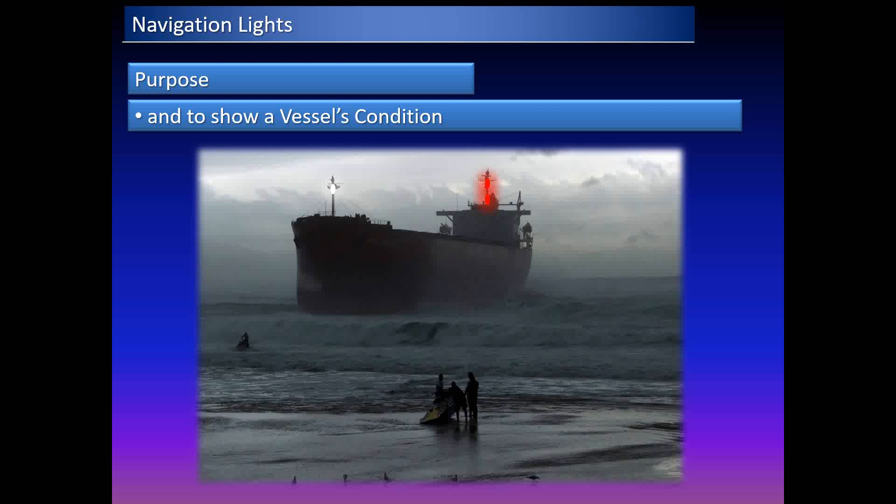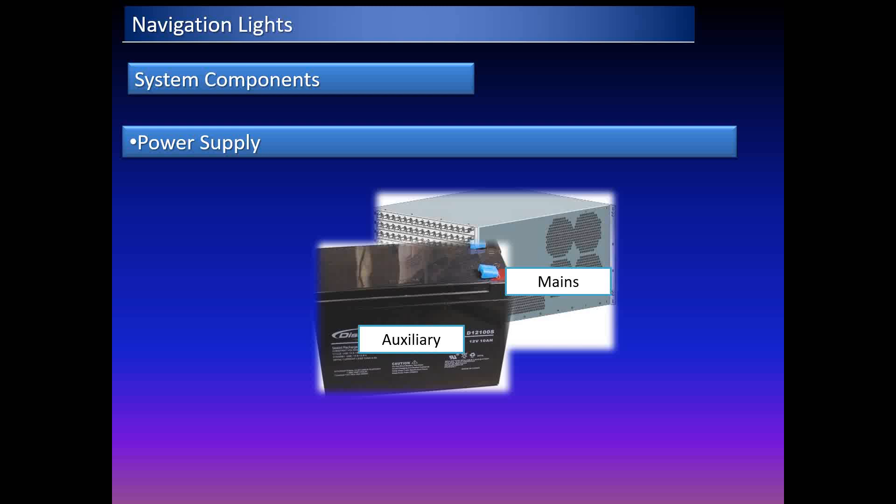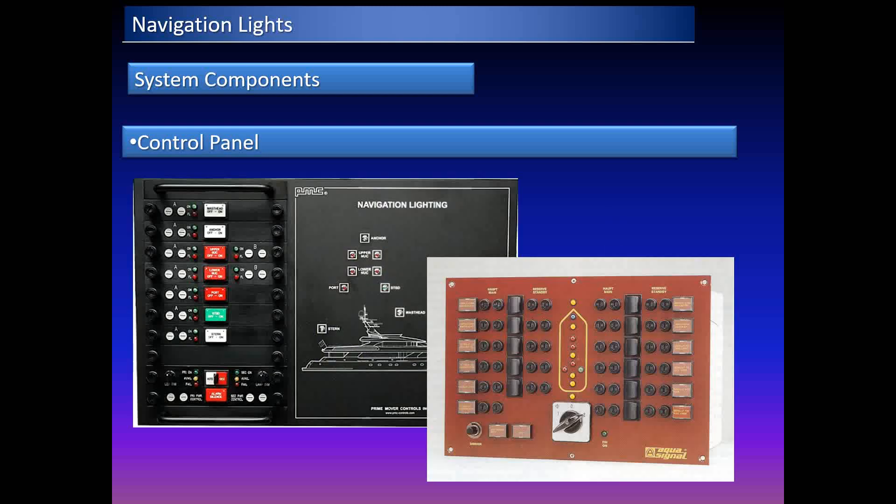Those are the different purposes of navigation lights. The components of the navigation light system comprise the power supply — both main and auxiliary. The auxiliary power is backed up not only by the main generators but also by the emergency generator, because navigation lights are considered critical equipment on the ship.